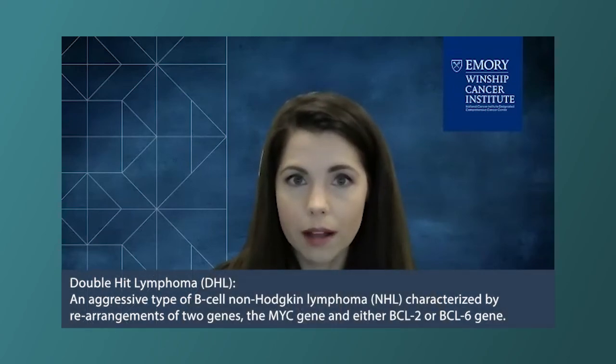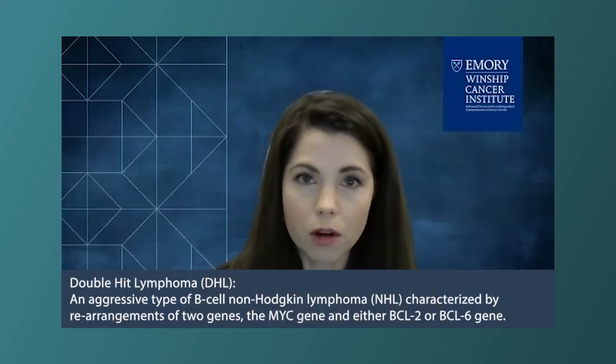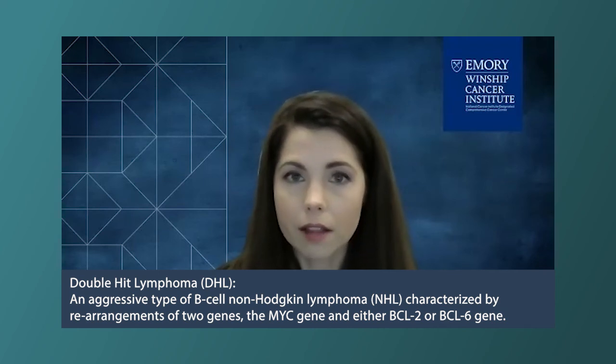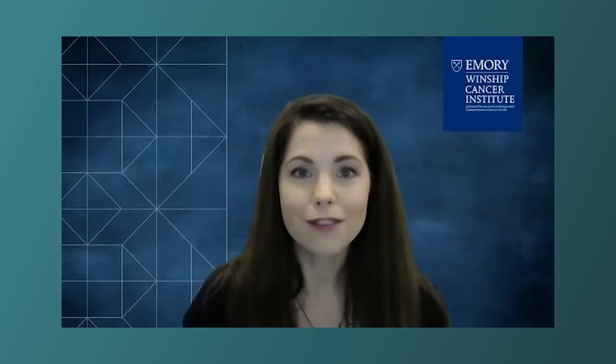You can also divide DLBCL up by other genes that it may express. Patients may be familiar with the term double hit lymphoma, which refers to a large cell lymphoma that has rearrangements of certain genes, namely MYC and either BCL2 or BCL6. And then there are other definitions based on where the lymphoma arises. So as you can see, there are lots of nuances into subdividing this disease — lots of different varieties and subtleties. But one of the main breakdowns is between ABC and GCB.